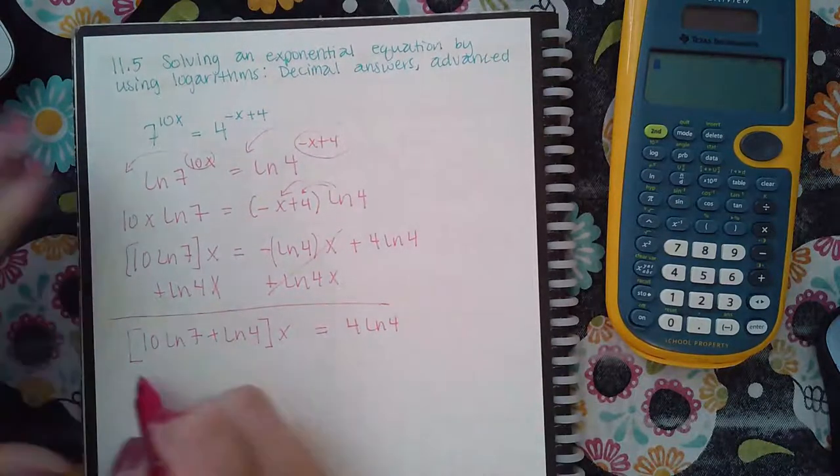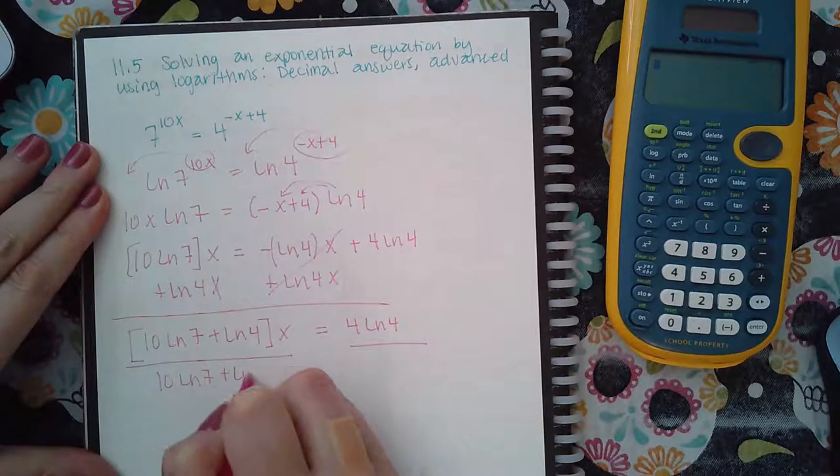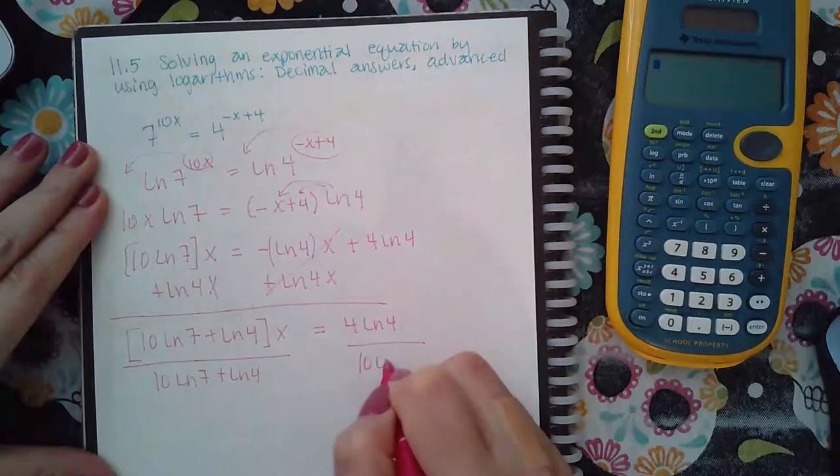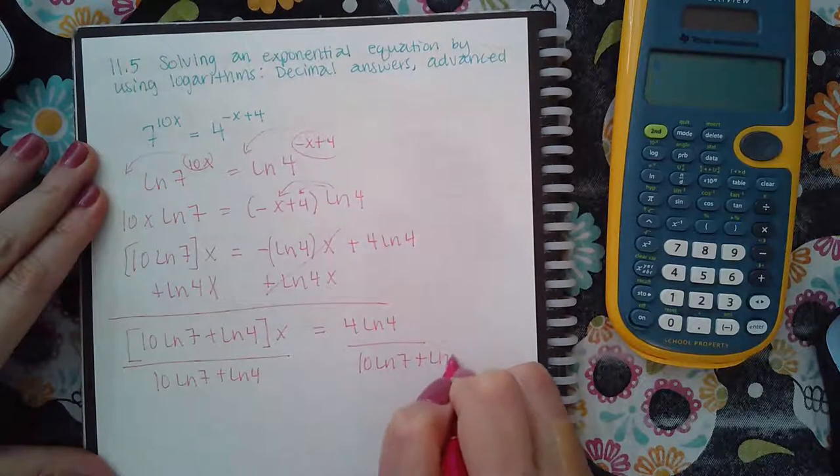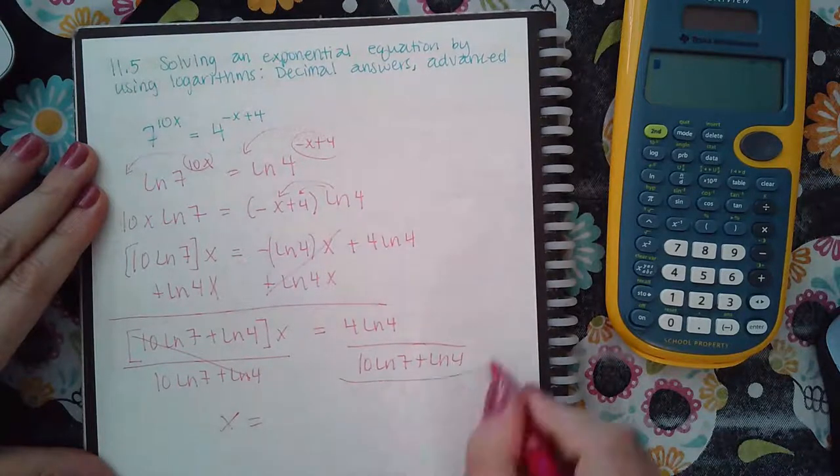Then I'm going to divide both sides by that value, 10 ln(7) plus ln(4). Those go away, and I get x equals this whole expression.